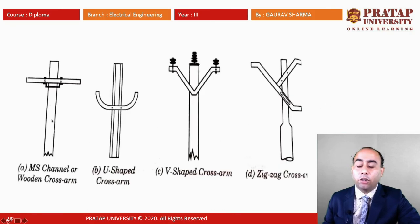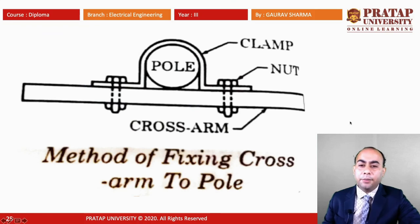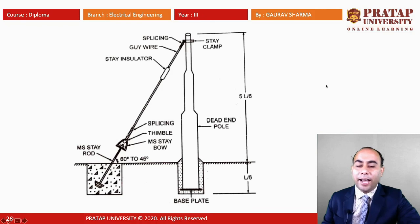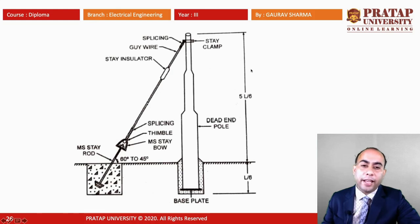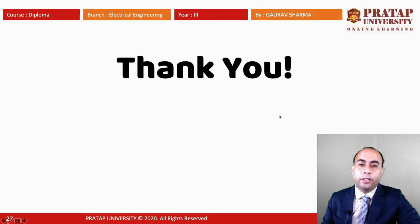Various types of cross arms are installed on poles: MS or wooden cross arm, U-shaped cross arm, V-shaped cross arm, and zigzag cross arm. The cross arm is fixed behind the pole using a clamp and nut, tightening the clamp to secure it to the pole. The guys and stay arrangement is attached at the top of the pole with the bottom portion grounded and fixed in an RCC block, creating an additional counterforce to prevent the pole from falling in a given direction. That's all for today; the next topic will be discussed in the next class.